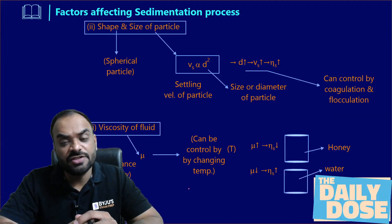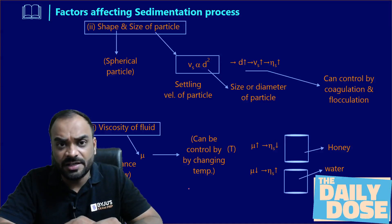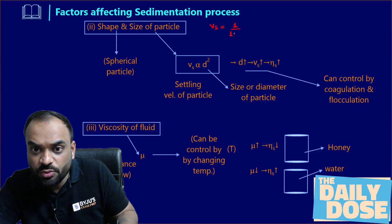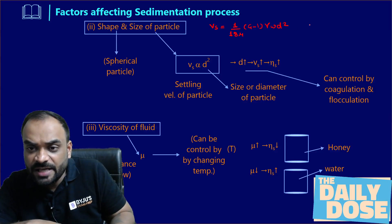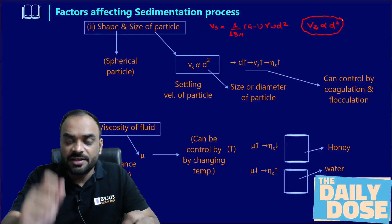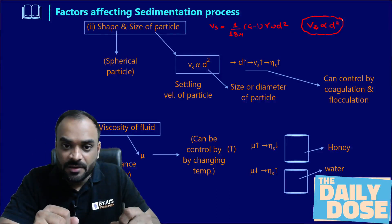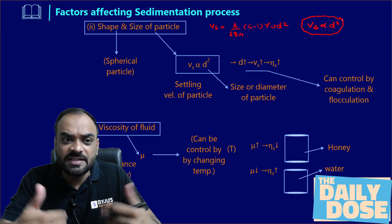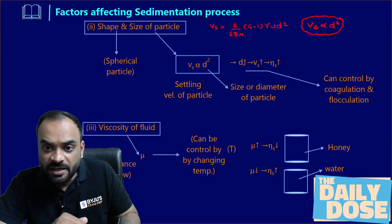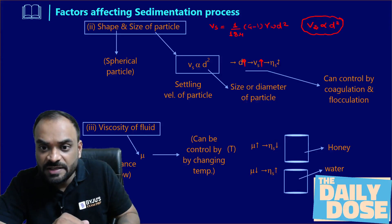The next factor is basically the shape and size of particle. Usually the shape of the particle is spherical in nature. From Stokes' law, the settling velocity formula is: (1/18μ) × (G − 1) × γ_w × D². So the settling velocity of a particle is proportional to the diameter squared. That means if you have a larger size of particle, the settling velocity will also increase, and the sedimentation efficiency will also get increased.